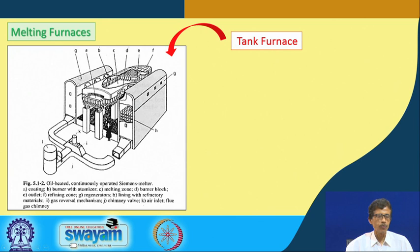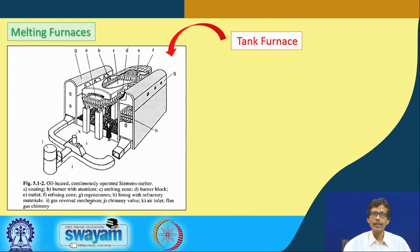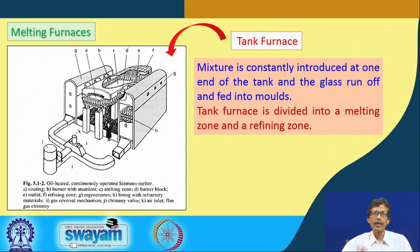There are different components: starting from the coating, then burner, melting zone, lining with refractory materials, gas reversal mechanism, chimney valve, air inlet, and flue gas chimney. This is the basic idea of what a particular type of melting furnace looks like. You have the burner with atomizer, the melting zone C is the central part, the burner blocks below, outlet E, the refining zone, and regenerators where material that is not crystallizing can be regenerated from the furnace.